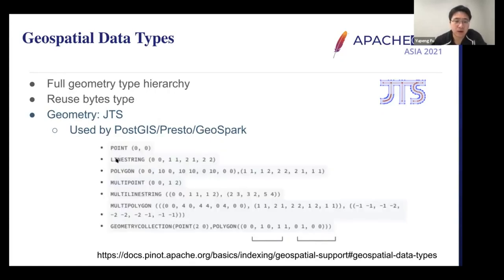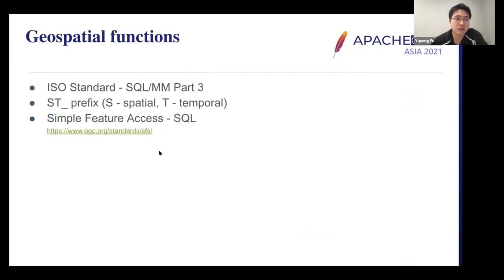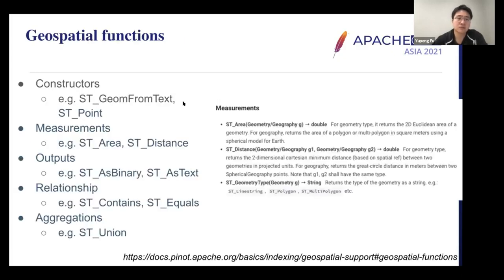This is a good example of how you can express geospatial types using functions. For the geospatial functions, we made them ISO standard compliant, and all functions have the ST_ prefix — ST stands for Spatial and T stands for Temporal. For example, you can calculate the distance between two points or calculate the area of a polygon. For more information, you can navigate to the user docs.